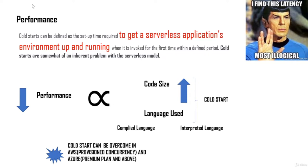The two most important factors affecting cold start are code size and the language used. The larger the code size, the greater the cold start and the worse the latency. Another important factor is whether you're using a compiled or interpreted language. In AWS and Azure, there are ways to overcome cold start: AWS has provisioned concurrency, and in Azure you can use a premium plan. However, these are expensive solutions.